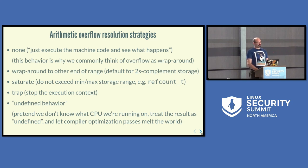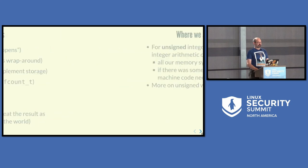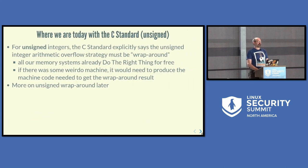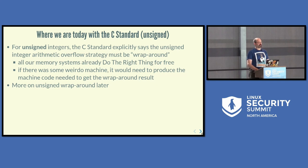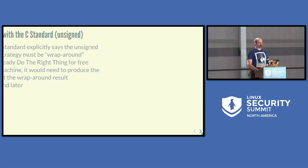Undefined behavior means: pretend we don't know what CPU we're running on, treat the result as undefined, and let compiler optimization passes do insane things. In the C standard, for unsigned types, unsigned integer arithmetic overflow must wrap around — all our memory systems already do this for free. We depend on it. But we'll come back to unsigned wraparound. Most of our problems come from the C standard's dealing with signed integer types.